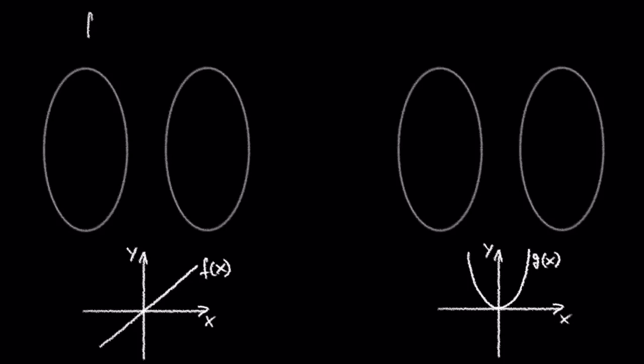Let's look at the functions f equals x and g equals x squared. Which of these two functions is a 1 to 1 function?